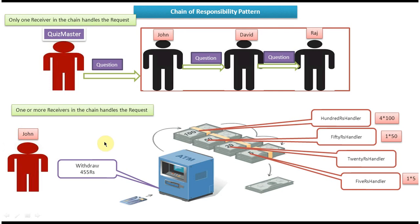John comes to the ATM machine and tries to withdraw money. He inserts his card, types his PIN, and enters 455 rupees as the amount to withdraw. Once he does that, the ATM sends the request to the 100-rupee handler. The 100-rupee handler dispenses 400 rupees (four 100-rupee notes), and then there are 55 rupees remaining, so it sends the request to the next handler.